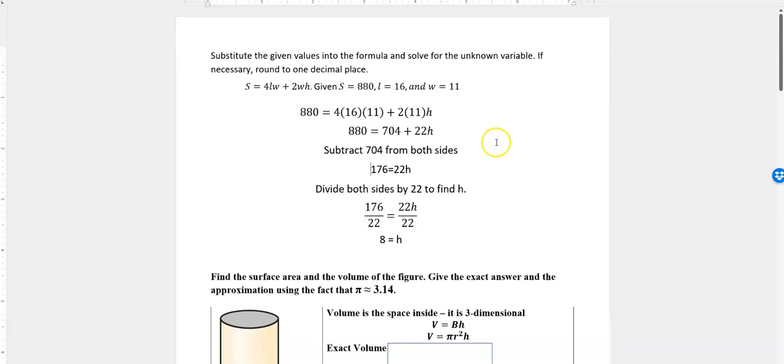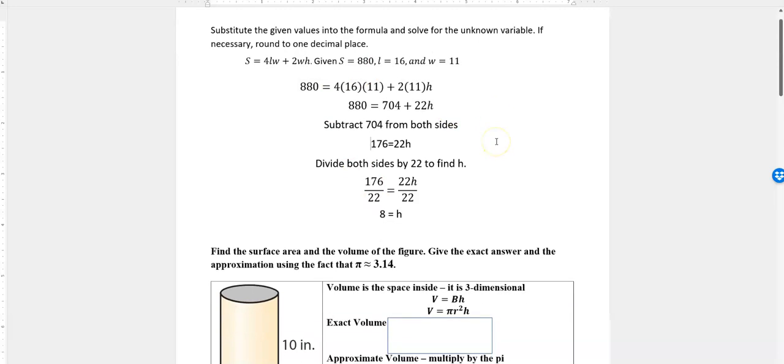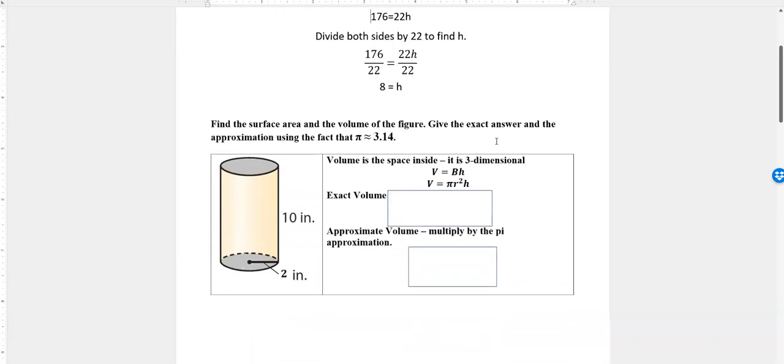This didn't give us any dimensions, but surface area would be square inches or square centimeters or whatever. Next, we're asked to find the surface area and volume of the figure, giving the exact answer and the approximation using pi equals 3.14. These wavy lines mean approximately—pi is not exactly 3.14, that's the approximation we're using. Volume is the space inside.